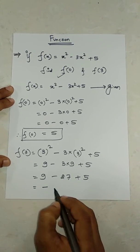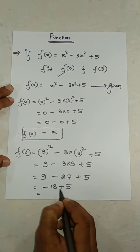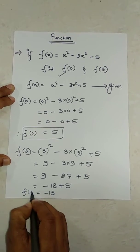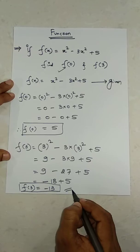5 minus 18 will give you minus 13. So, f(3) is equal to minus 13. Thank you.